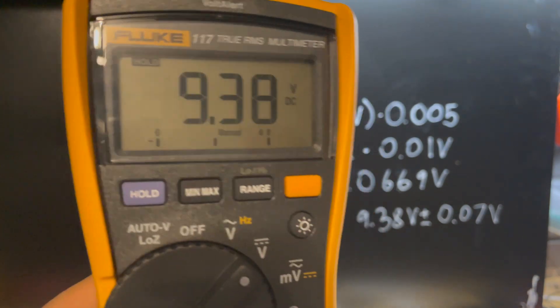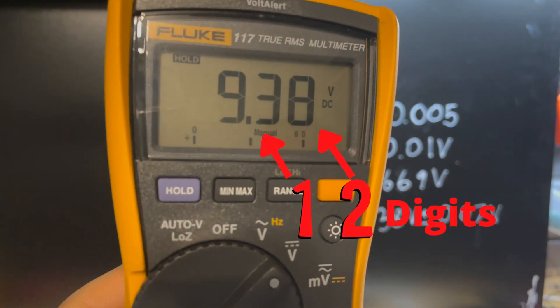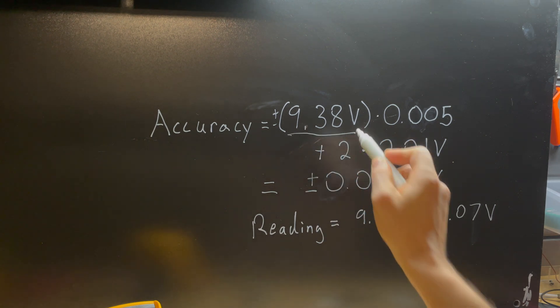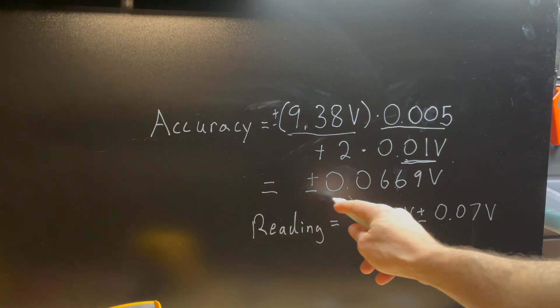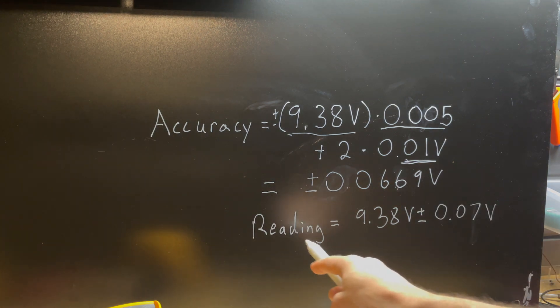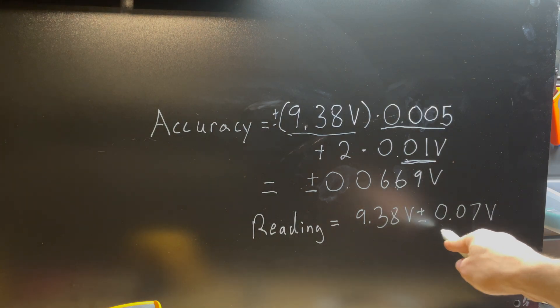So if we measure a voltage of 9 volts, we're only going to get two digits of information past the decimal point. In the previous video, I calculated the accuracy for the Fluke 117 with a reading of 9.38 volts and an accuracy of around plus or minus 0.07 volts.